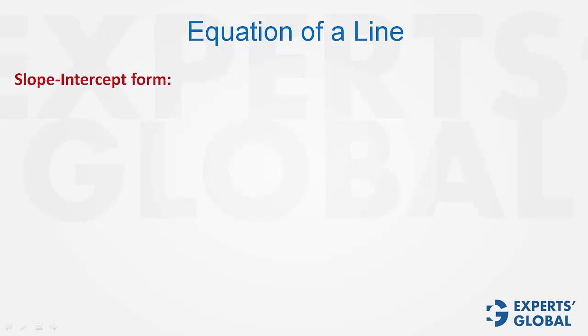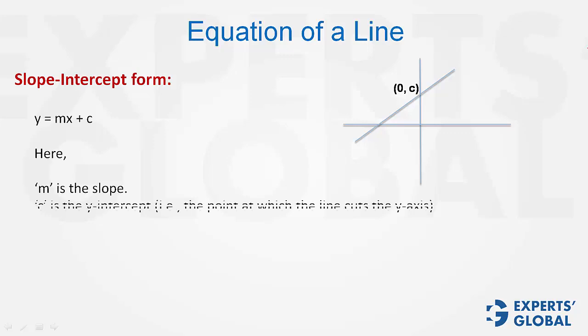Equation of a line in the slope-intercept form. When the slope of the line is known and the y-intercept is known, the equation of the line can be easily determined using the relationship y equals mx plus c, where m is the slope and c is the y-intercept. That means the point at which the line cuts the y-axis.